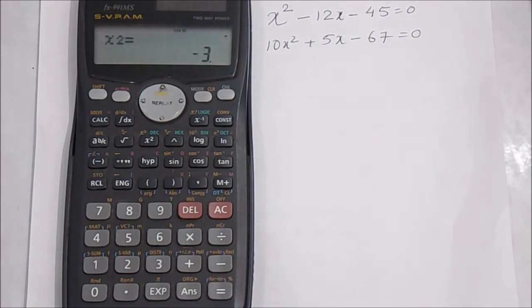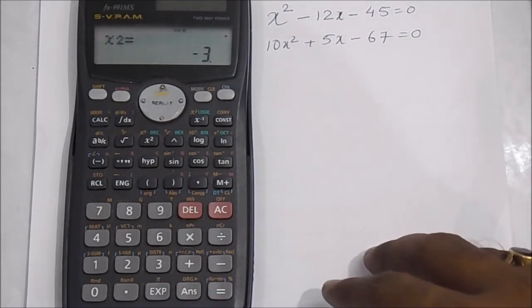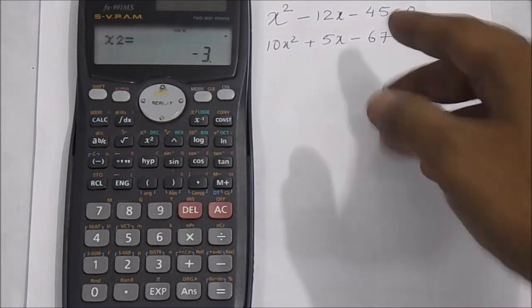When we solve, we write x = 15 or x = -3.